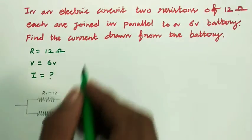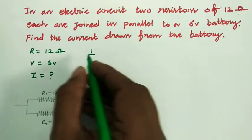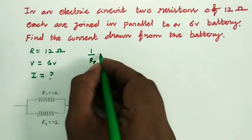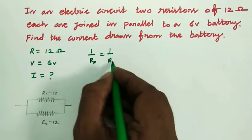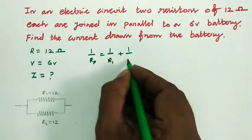So therefore, the value of the resistor in parallel, Rp is equal to 1 by R1 plus 1 by R2.